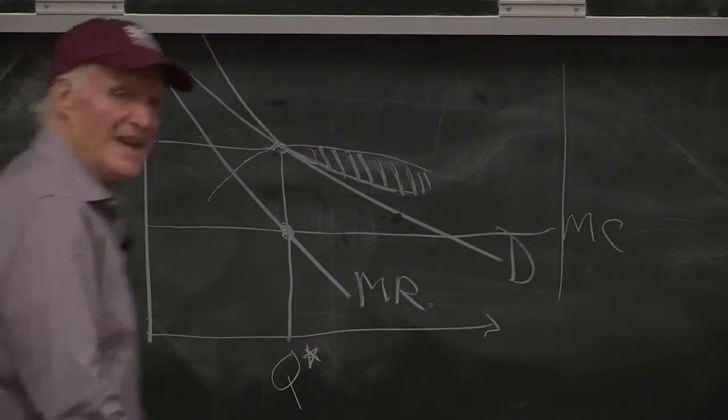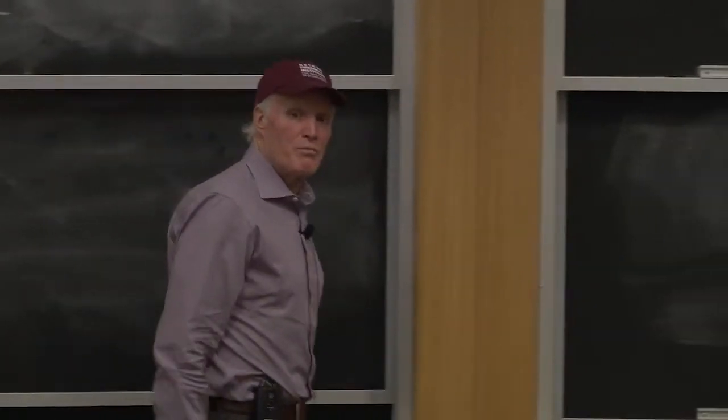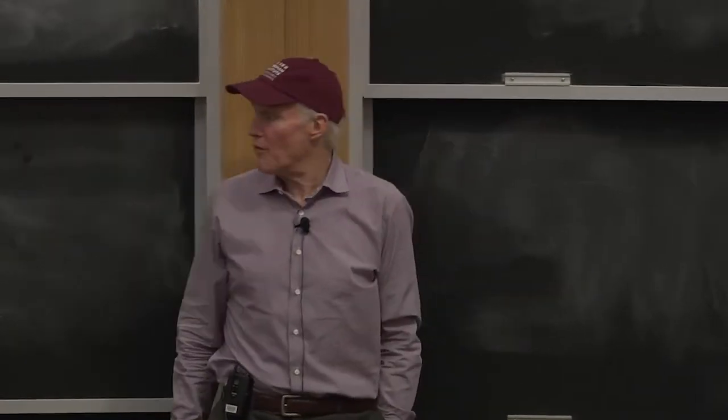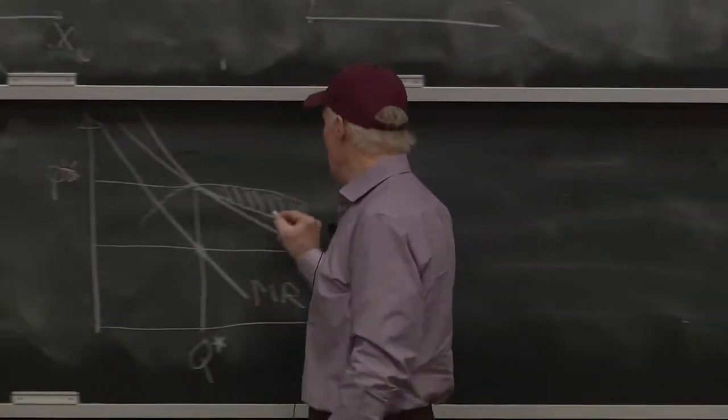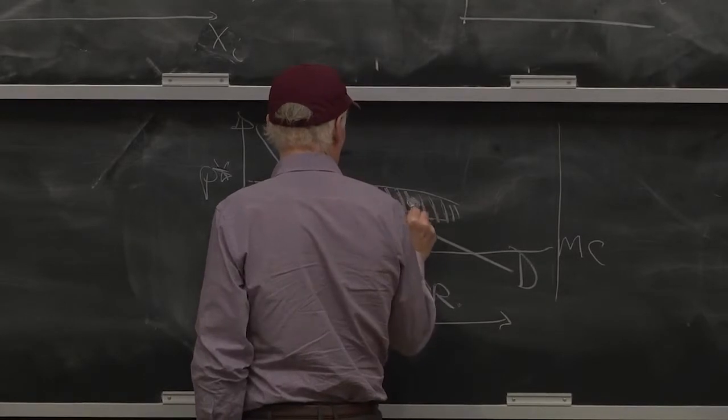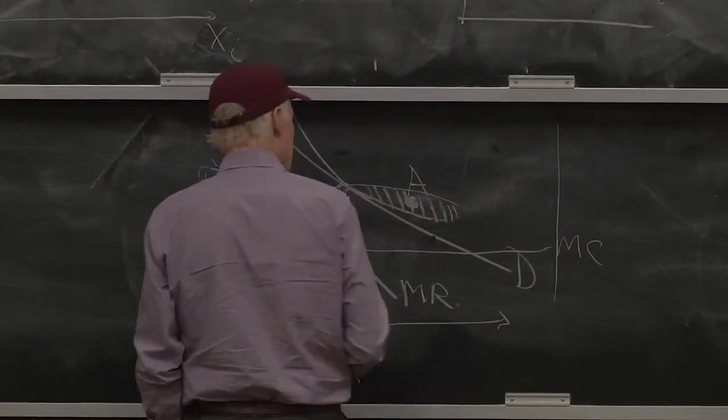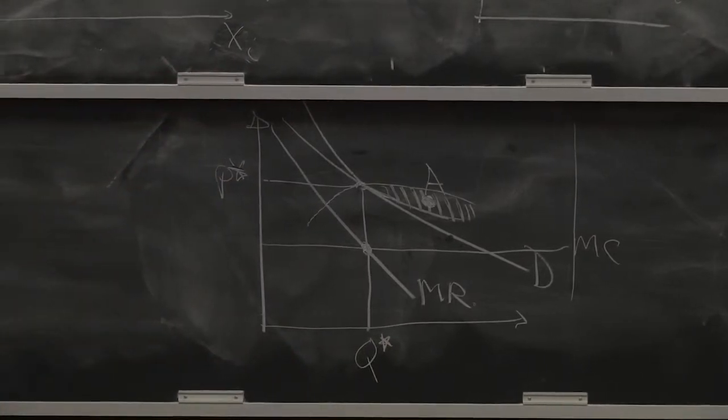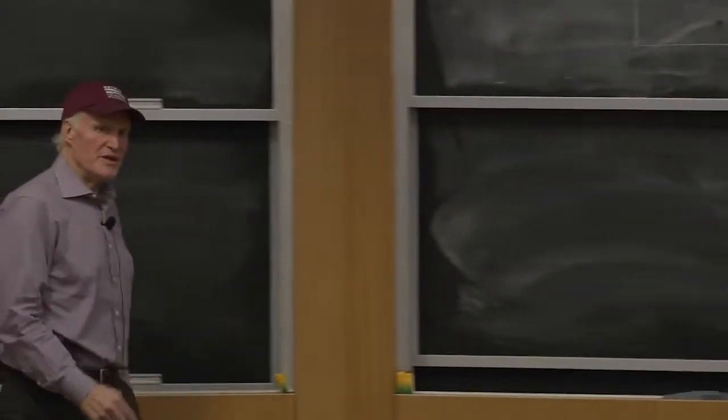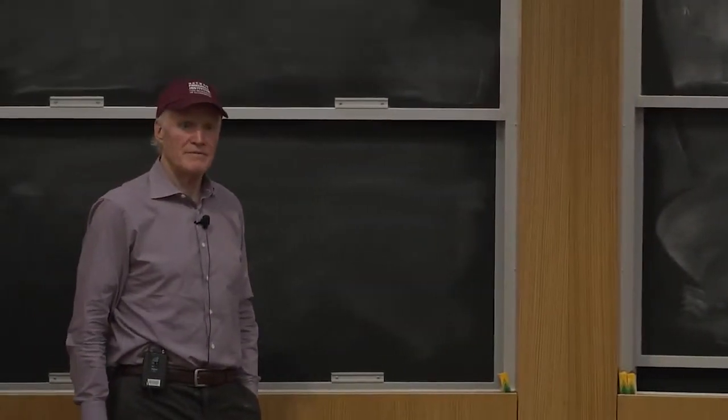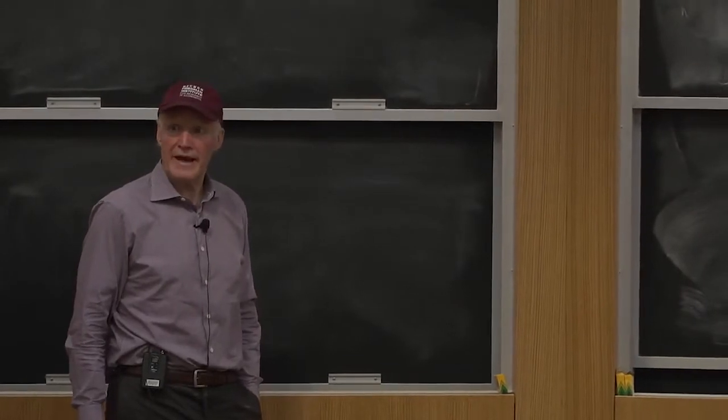Yeah, there's gains from trade in that region. They're both better off. They would both prefer to get out here somewhere. Call that point A. They would both prefer point A to this monopoly equilibrium. They both would like to be at A.